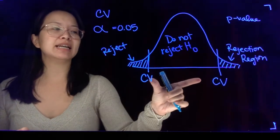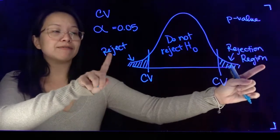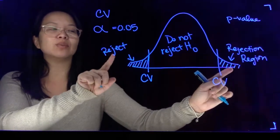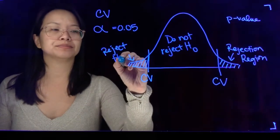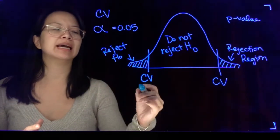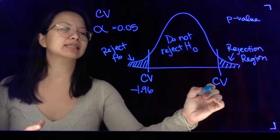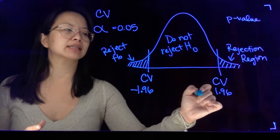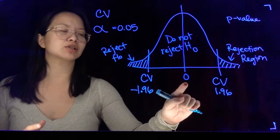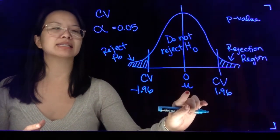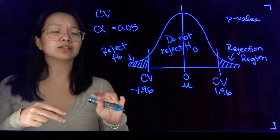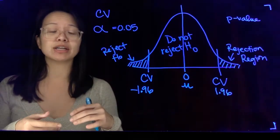Just think of it this way: if my data falls in the middle I don't reject, but if it falls out in the tails that means it's so special it fell in that tiny area and we have enough evidence to reject the null. Let's imagine I plugged in my alpha into Excel and found the critical values to be negative 1.96 and positive 1.96. Zero is our starting point and represents the true hypothesized mean.